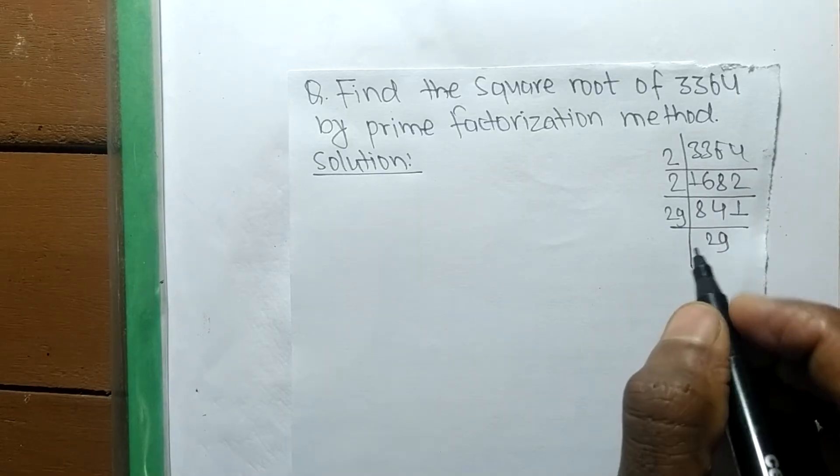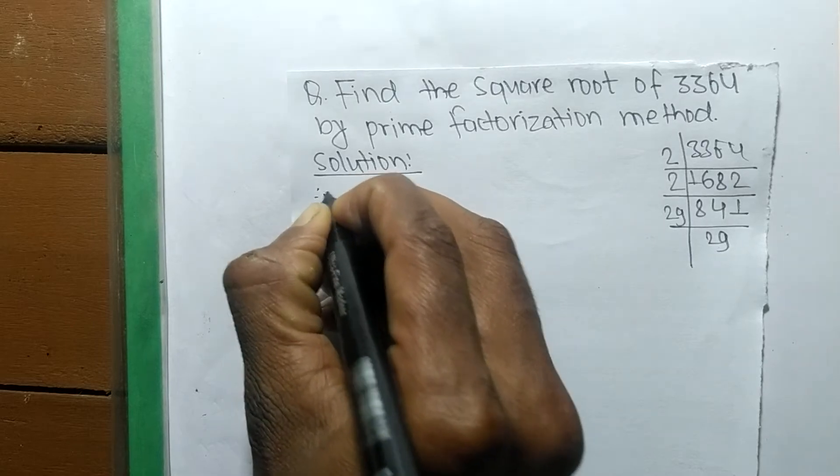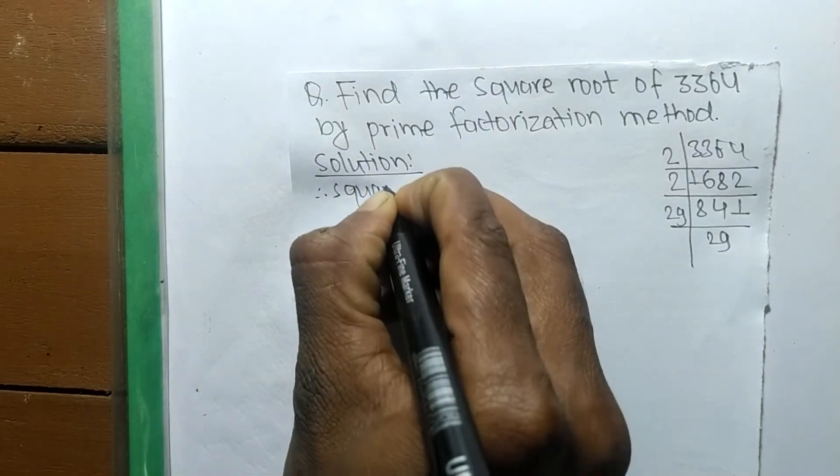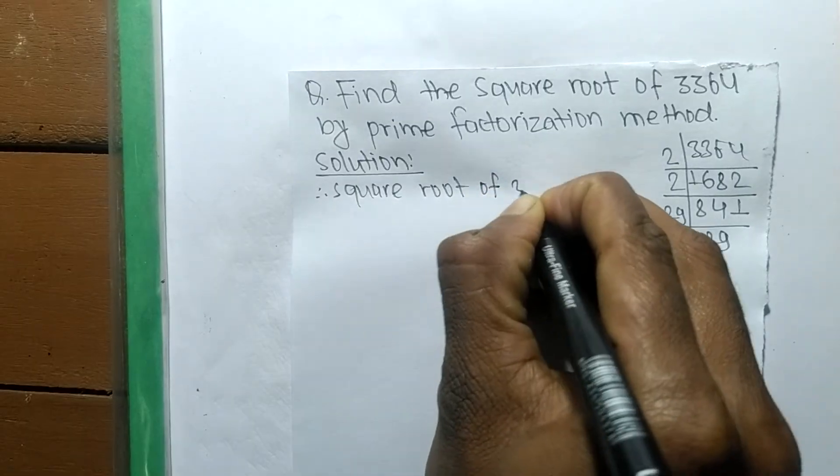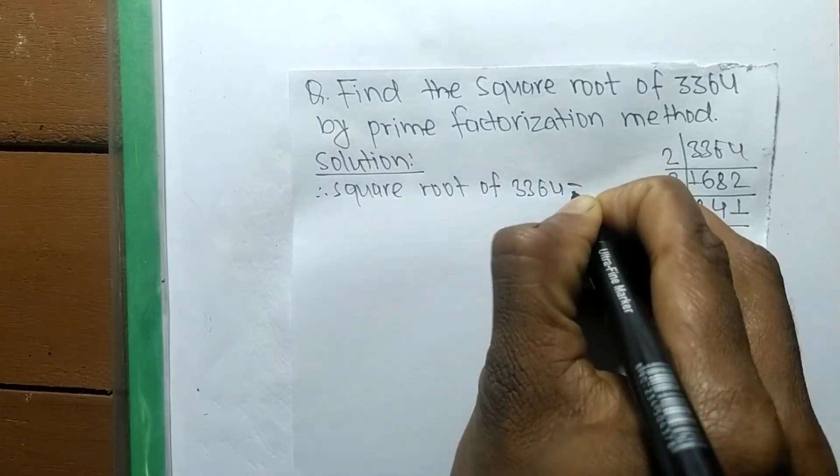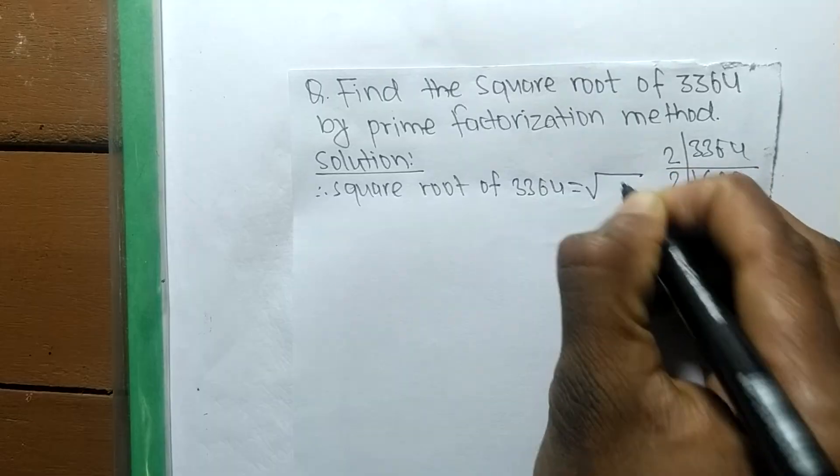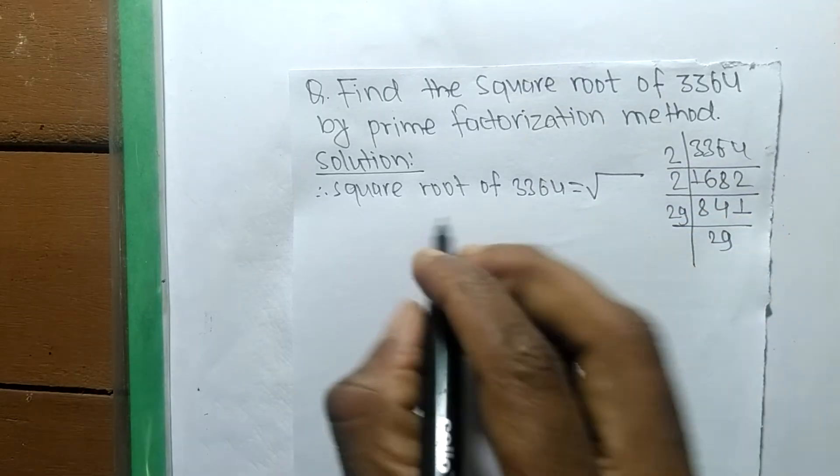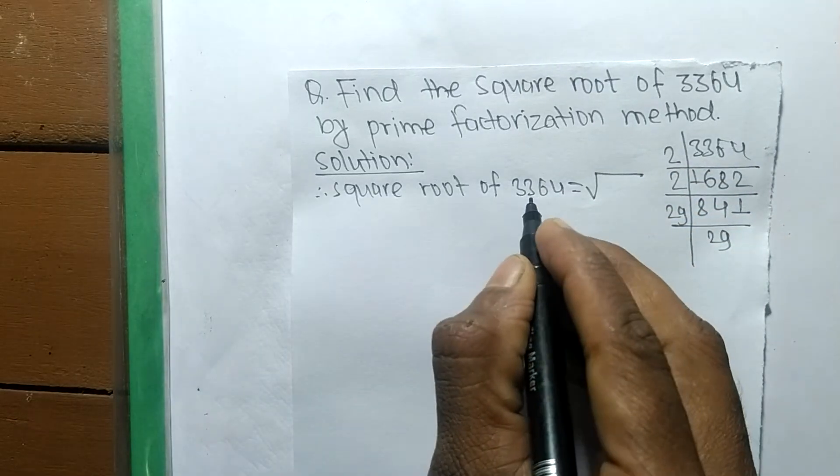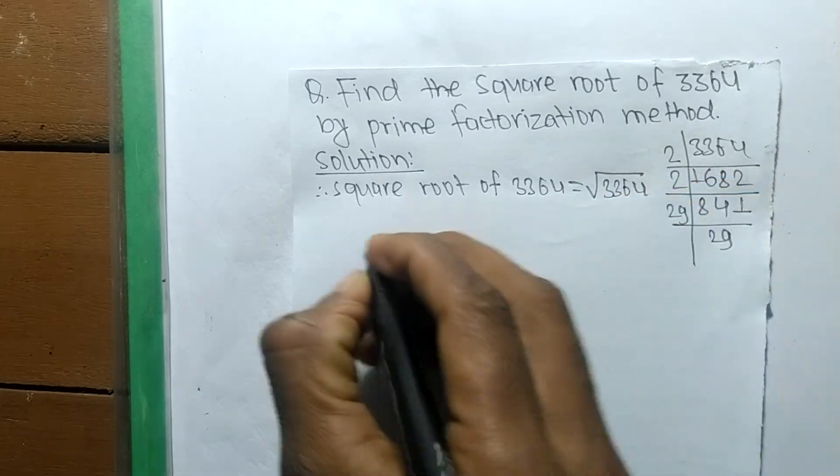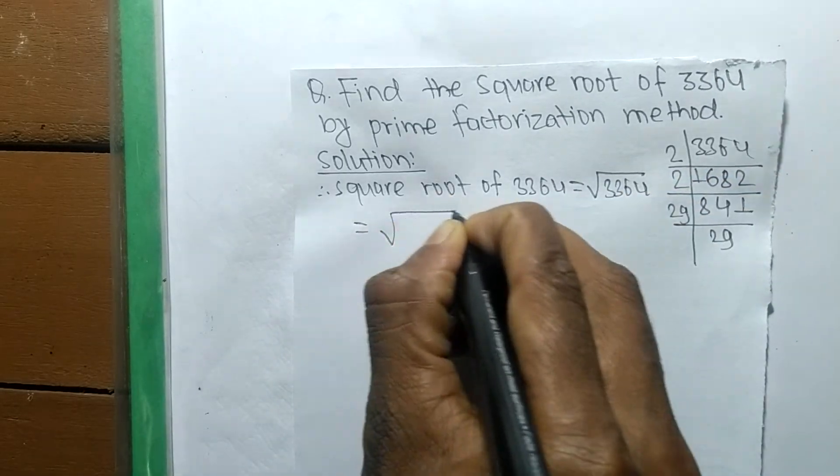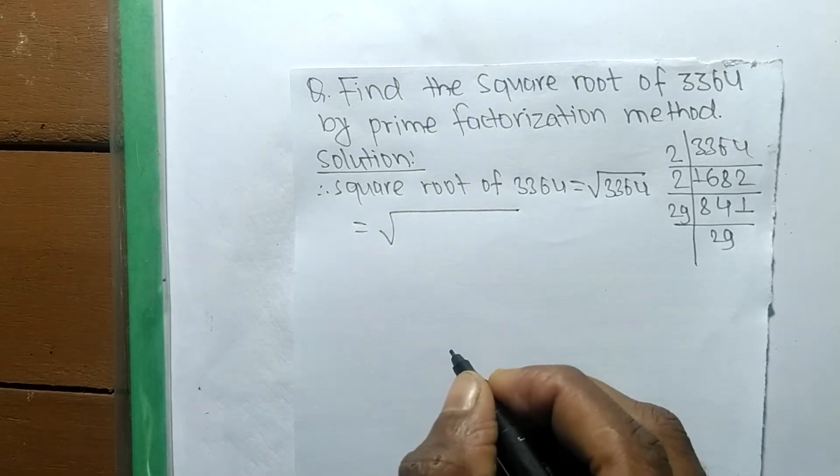Now we shall find the square root. The square root of 3364 is equal to - this is the sign of square root - and we are finding the square root of 3364.